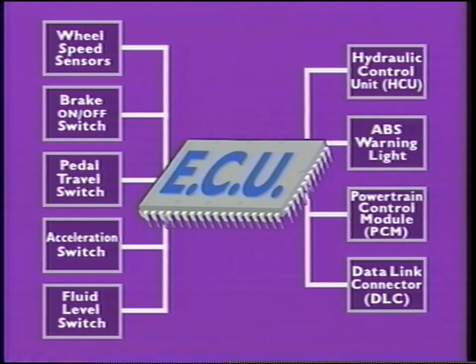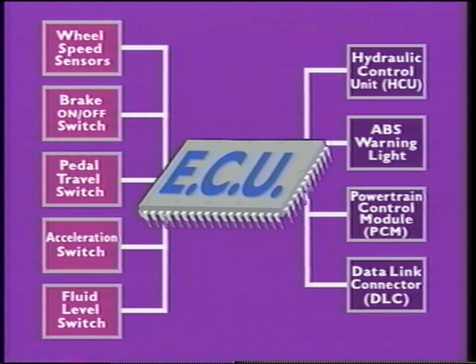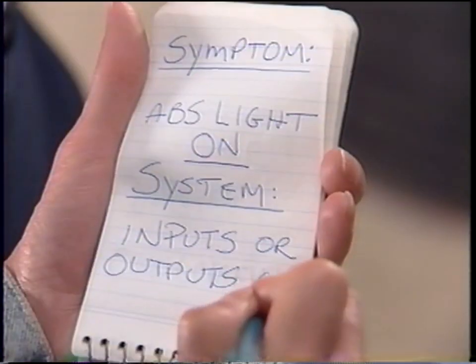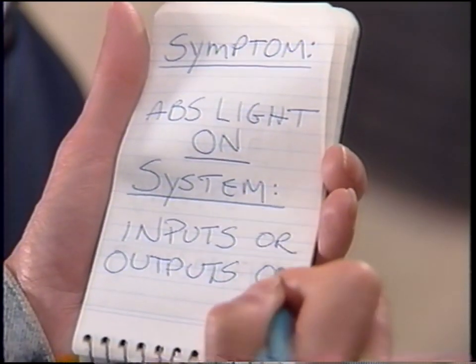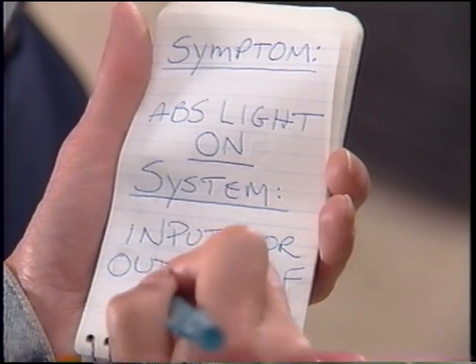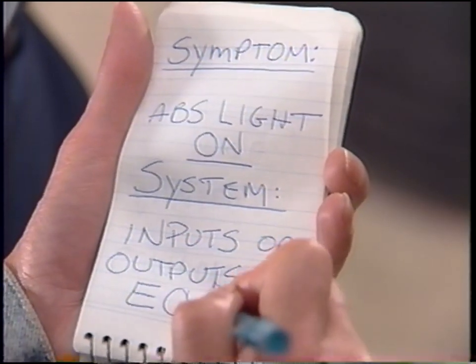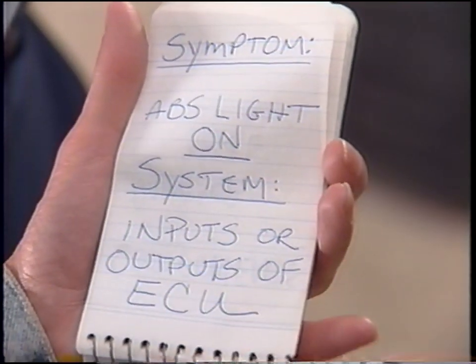The tech then asked what part of the anti-lock brake system could cause the light to come on. Thinking for a second, I realized that since the ECU controls the ABS warning light, the fault would have to be a part of the system that either sends information to, or receives orders from, the ECU. The tech agreed. So the system we need to diagnose on the squad car is the ECU and its inputs and outputs.